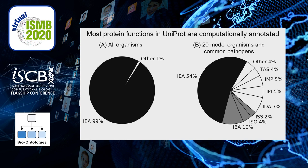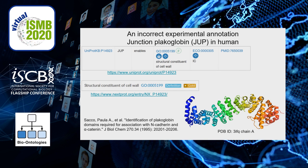Such heavy use of computational predictions in protein function databases inevitably leads to many misannotations. Meanwhile, many high-throughput analyses rely on these GO annotations. It will not help us understand the biological problem if analysis on a human dataset pulls out a lot of unrelated functions, such as cell wall. In fact, there are proteins misannotated as cell wall in animals.